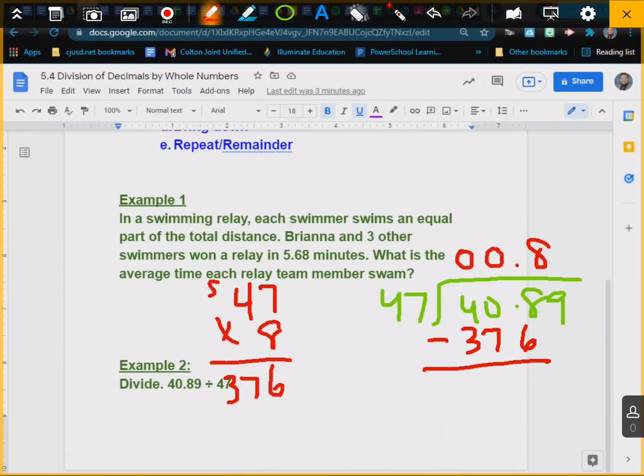Then we subtract. 8 minus 6 is 2. We have to regroup here. 10 minus 7 is 3, and 3 minus 3 is 0. Now we bring down the 9. Okay? Bring down the 9. And I got 329.